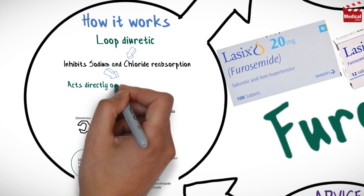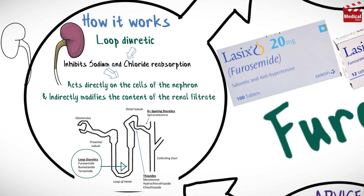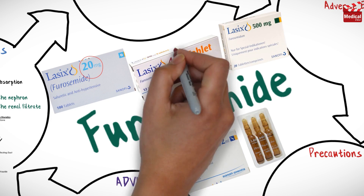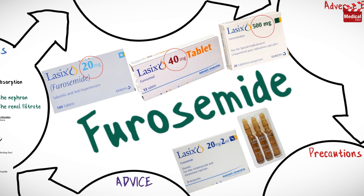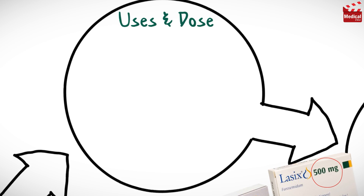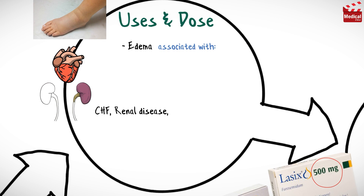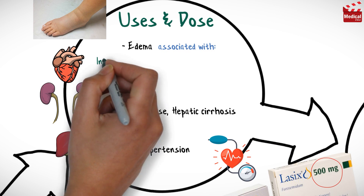It acts directly on the cells of the nephron and indirectly modifies the content of the renal filtrate. It is available as 20, 40, and 500 milligrams tablets and also available as injection. Furosemide is used in the treatment of edema associated with congestive heart failure, renal disease, and hepatic cirrhosis, and also used for hypertension.